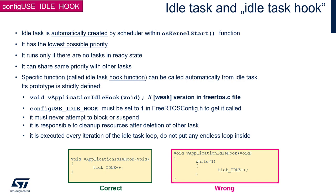Let's discuss hooks one by one, starting with the idle task hook. To use it, we need to define configUSE_IDLE_HOOK within FreeRTOSConfig.h. As a reminder, the idle task is automatically created by the scheduler with the OS kernel start function. It has the lowest possible priority and runs when no other task is in the ready state. It can share the same priority with other tasks. The prototype of the vApplicationIdleHook function is strictly defined — no argument and no return value.